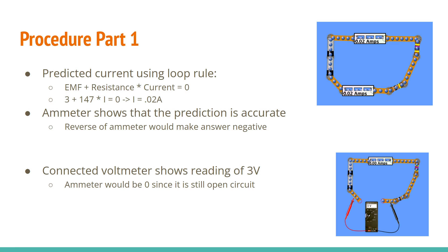So, part one of this lab, we're basically predicting the current using loop rule. The loop rule consists of EMF plus resistance times current, which has to equal zero. And so the EMF is just the total voltage of the batteries, which is three. And then the resistance is the two resistors added up, which would be 147 times the current equal to zero. Solving for current, you get I equal 0.02 amps.